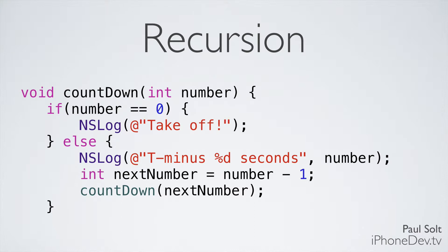If I gave you a starting number like 5, we'd come in, look at the first if — it's not true, so we go to the else. We'd print 't minus 5 seconds', then nextNumber equals 5 minus 1, which is 4. So we call countdown with 4.